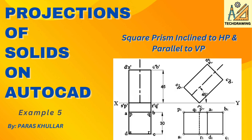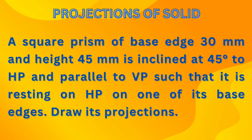Hello students. In this video we will learn how to draw the projections of solids. This is the case of a square prism which is inclined to HP and parallel to VP. So let us see how to draw its projections. The question is: a square prism of base edge 30 mm, height 45 mm, is inclined to HP at 45 degrees and parallel to VP, resting on HP on one of its base edges. Draw its projections.